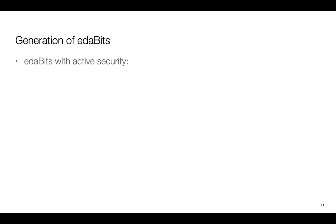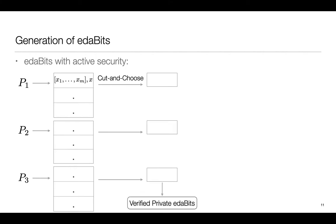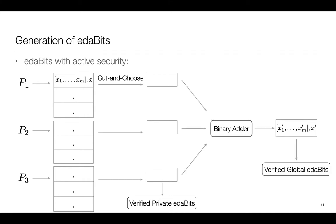For the active security case we let each party PI secret share a bunch of EDABITS with MACs. We then proceed to verify this set of EDABITS proposed using a modified Cut-and-Choose protocol and at this point we will have verified private EDABITS which we can put through a binary adder to get verified global EDABITS.